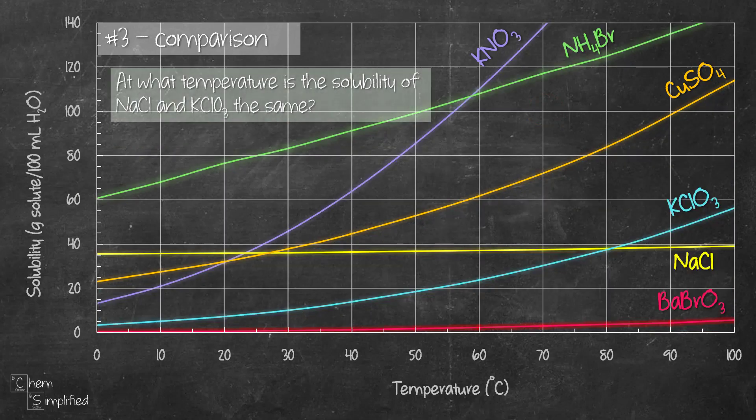The third use is comparison between substances. We're asked: at what temperature is the solubility of NaCl and KClO3 the same? We locate the two curves — NaCl is the yellow one and KClO3 is the blue one. Where the two curves intersect is the point where they have the same solubility. Looking down from that intersection gives roughly 81°C, meaning at 81°C the solubility of NaCl and KClO3 are equal.